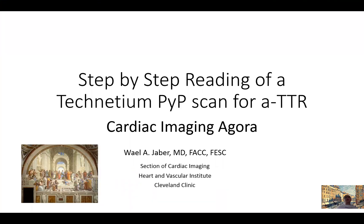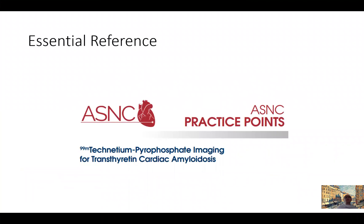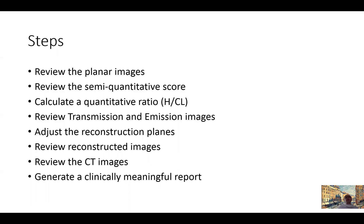Good day and welcome to another session of Cardiac Imaging Agora. In this session we will go over a step-by-step reading of a technetium pyrophosphate scan, a scan now being used commonly in patients with suspected diagnosis of ATTR amyloidosis. We will use one essential reference published recently by the American Society of Nuclear Cardiology — a very practical practice point that is clinically useful. We will review these scans in a logical way that leads to a clinically meaningful report.